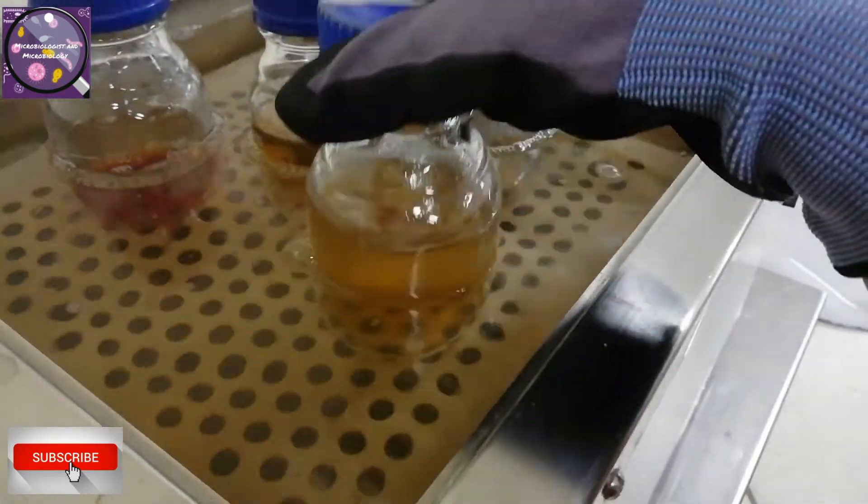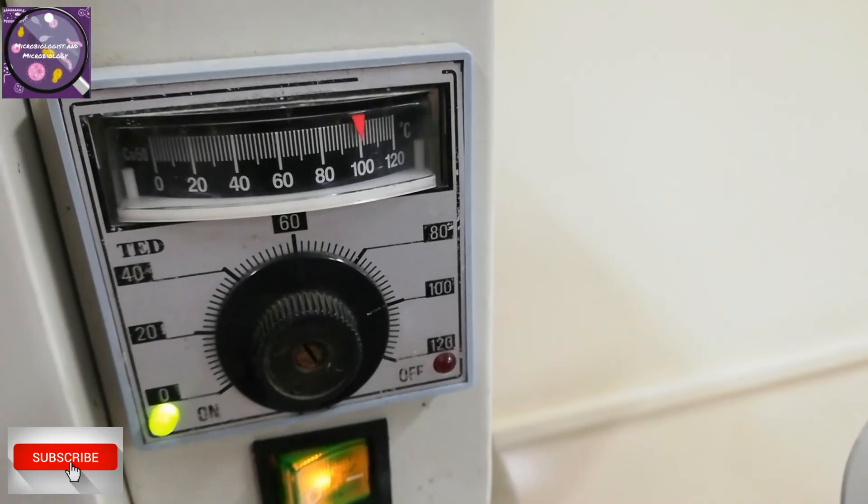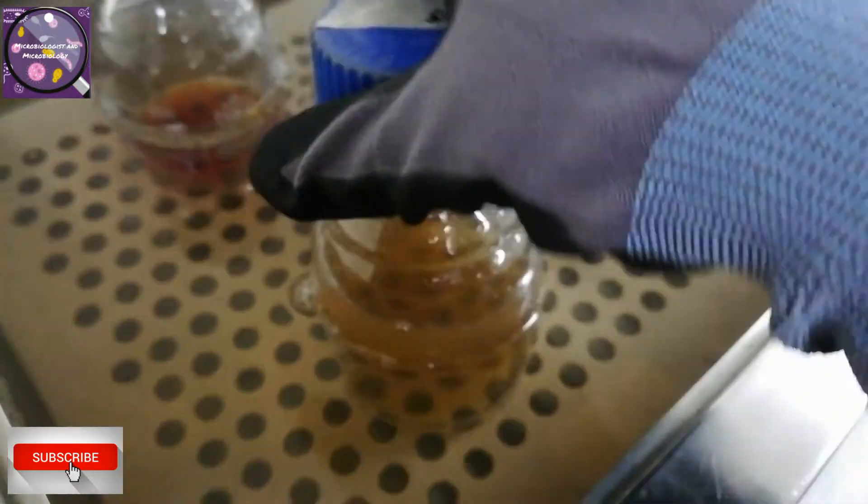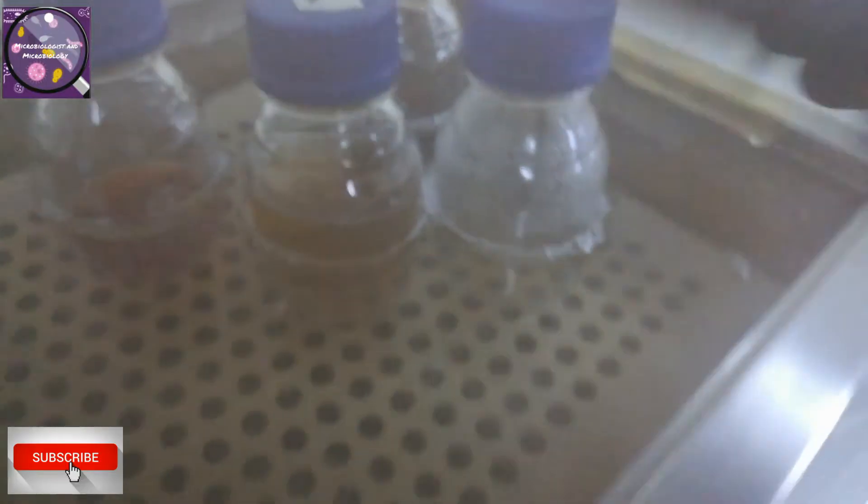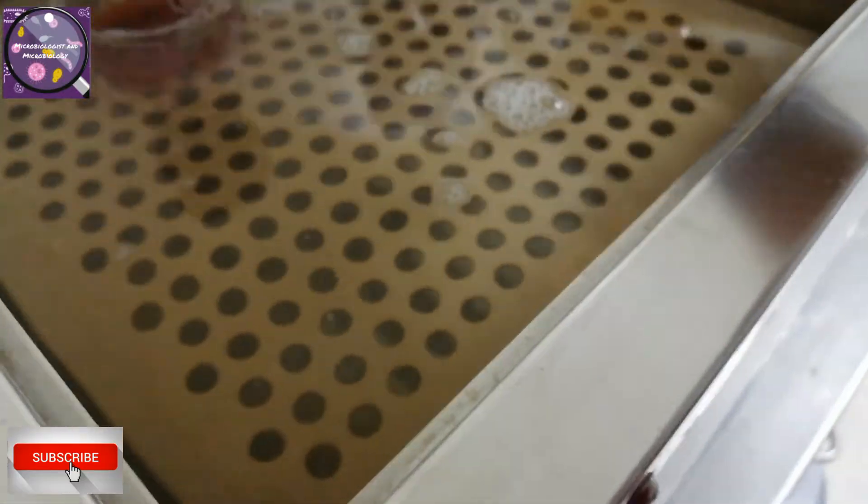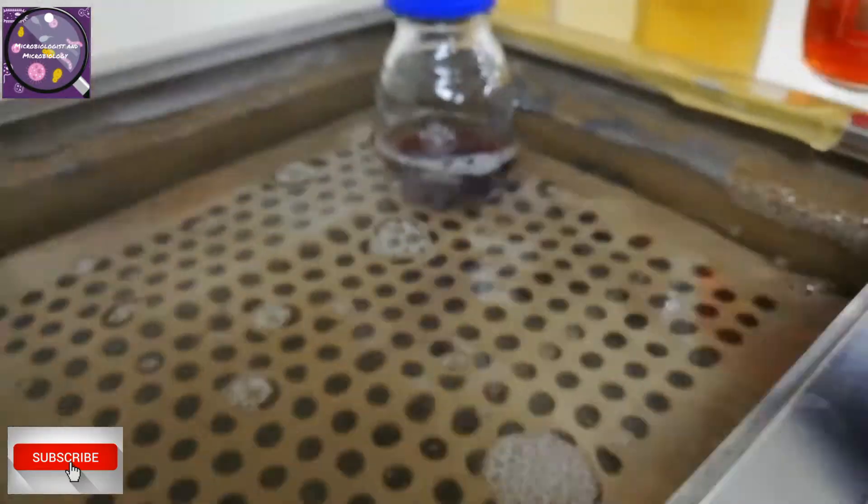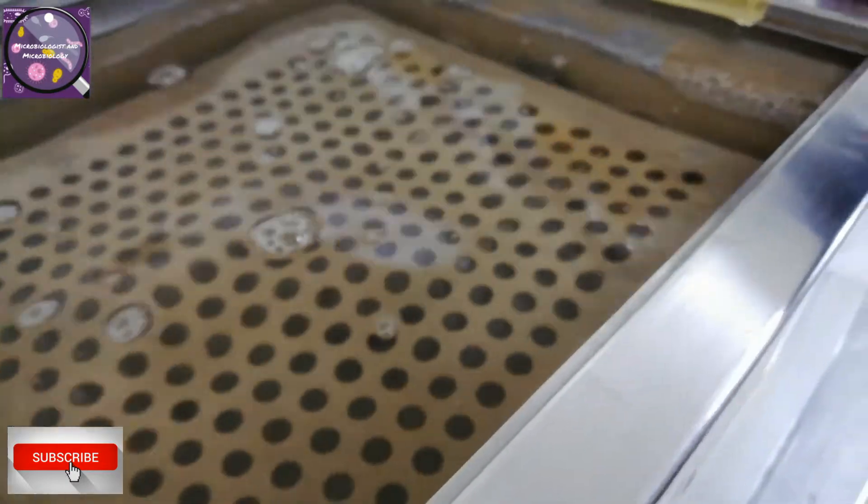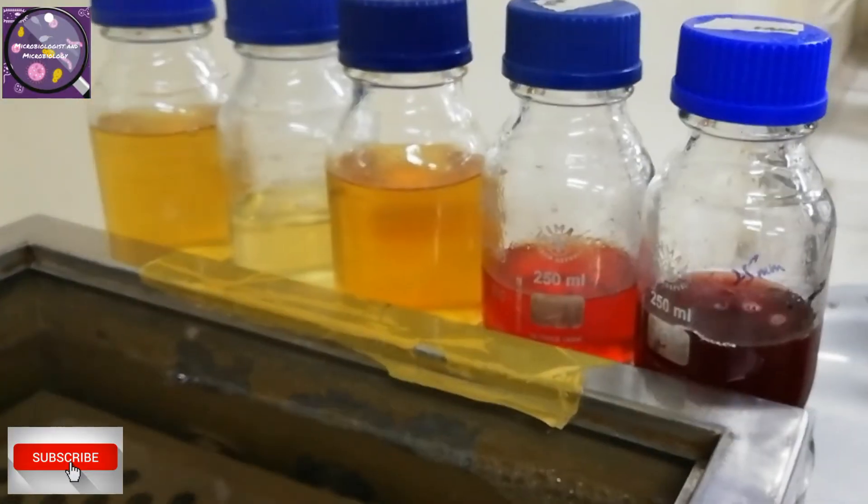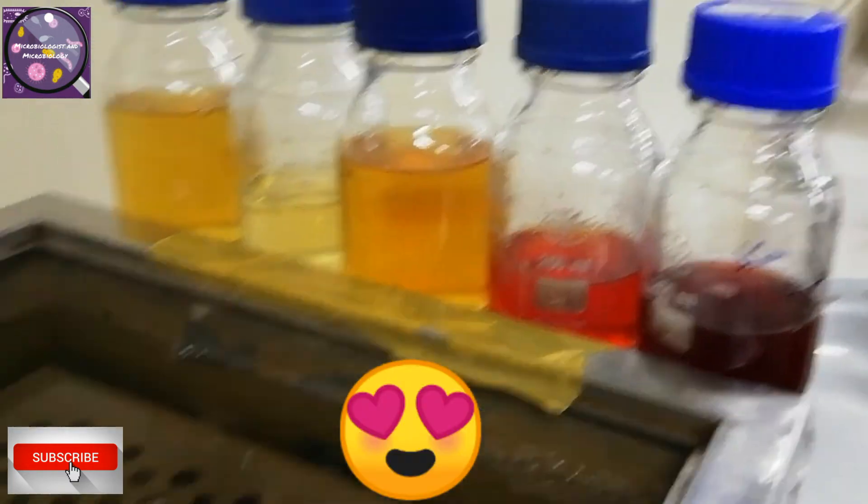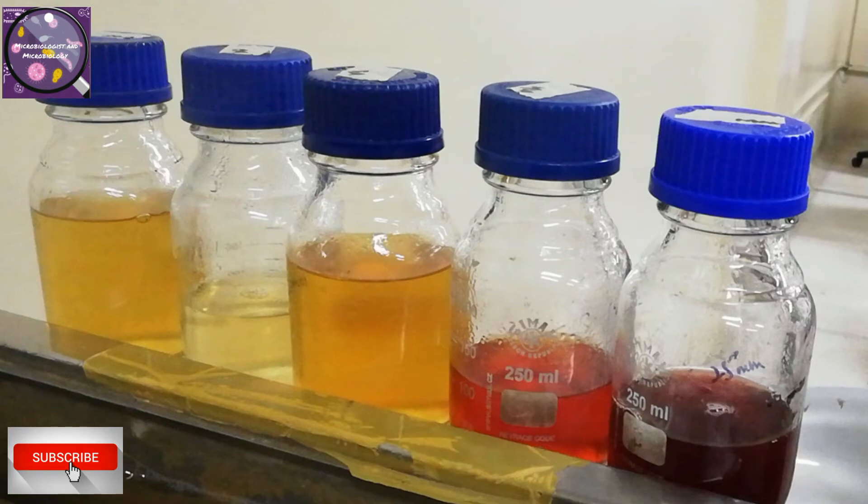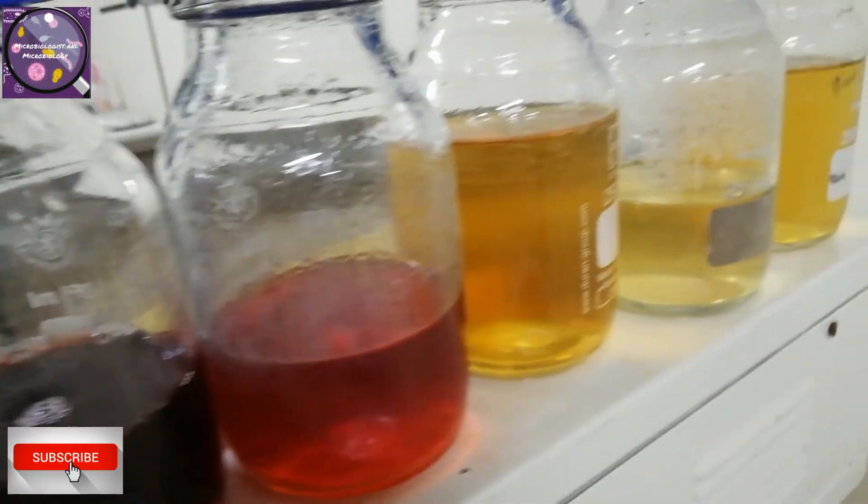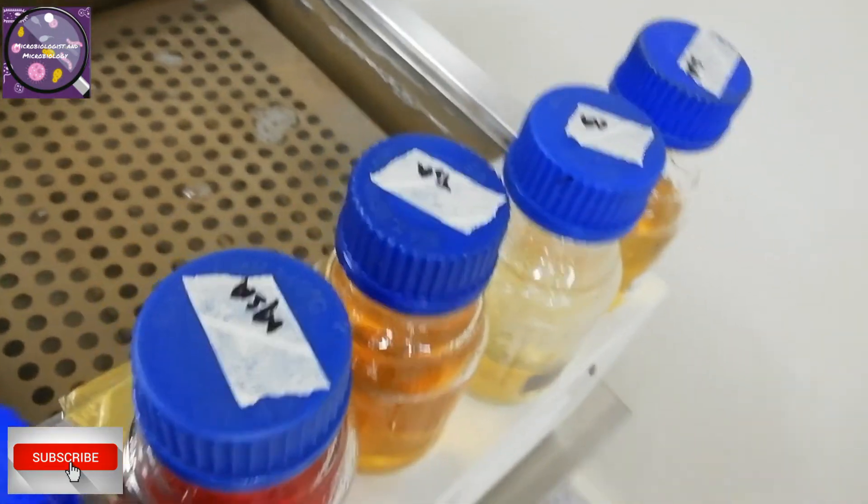After 45 minutes of continuous agitation and heating process the media becomes transparent, as you can see, that means it's done. Now I will remove these media bottles carefully from the water bath. Can you see these colors are looking very beautiful. Now I am going to do steam sterilization process through autoclave to sterilize all these media.